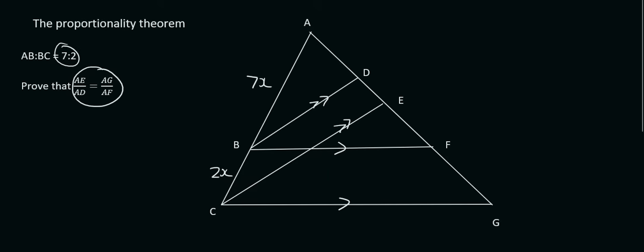Now what we always suggest is that you go straight to the question. So in a question like this where they want you to prove this, just start with the first one. Trust me, it works every time. So just go find AE over AD.